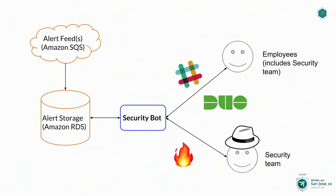In terms of how we built this, here's a high-level overview of the general architecture. At the top left, we have our existing alerting pipeline. Previously, most alerts would come in through email or a page. This is an additional stream that alerts can go through, specifically when they're associated with an end user in our company. We use Amazon SQS for this, but it could be any messaging or queuing service. From there, we populate these alerts into a database for permanent storage, so we can resurface them when doing investigations.